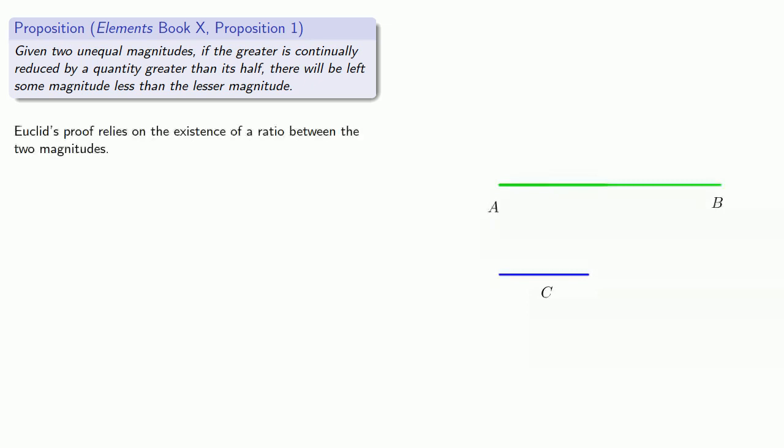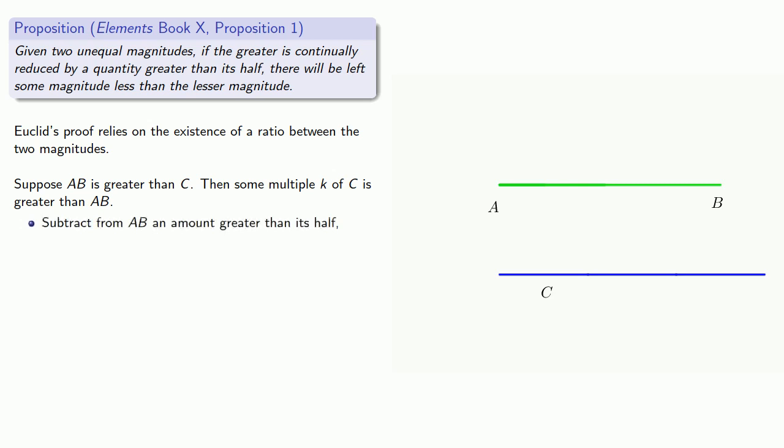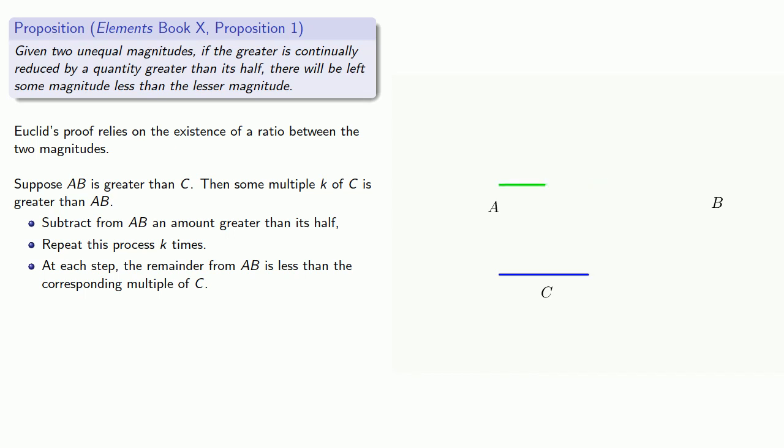Euclid's proof relies on the existence of a ratio between the two magnitudes. So remember that a ratio exists if one magnitude can be multiplied to exceed the other. So suppose AB is greater than C. Then some multiple K of C is greater than AB. And so now let's subtract from AB an amount greater than its half, and repeat this process K times. At each step, the remainder from AB is less than the corresponding multiple of C. So at the end of this process, the remainder is going to be less than C itself.